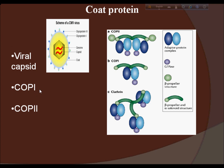COP1 is a type of vesicle coat protein that transports proteins from the cis end of the Golgi complex back to the rough endoplasmic reticulum. COP2 is a type of vesicle coat protein that transports proteins from the rough endoplasmic reticulum to the Golgi apparatus.